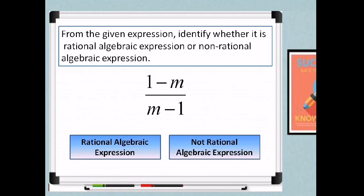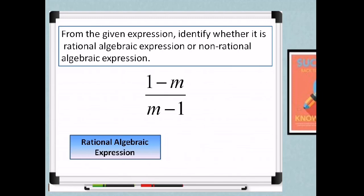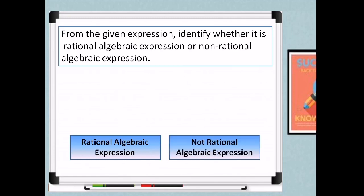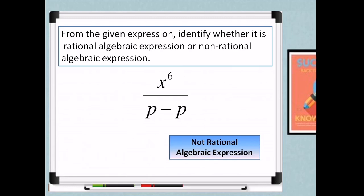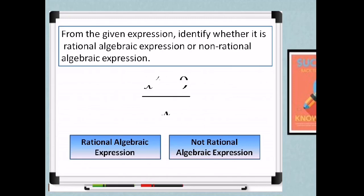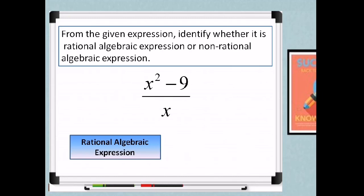Fifth: 1 minus m over m minus 1. Sixth: x to the sixth over p minus p — that is not a rational algebraic expression. Seventh: x to the sixth over p minus p, minus 9 over x — that is not a rational algebraic expression.